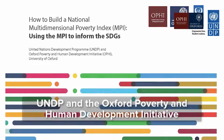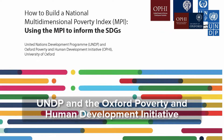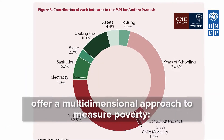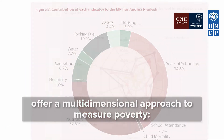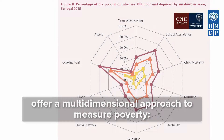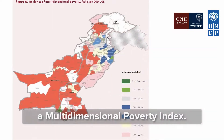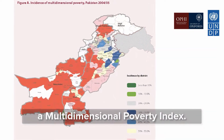UNDP and the Oxford Poverty and Human Development Initiative offer a multi-dimensional approach to measure poverty: a Multi-Dimensional Poverty Index.